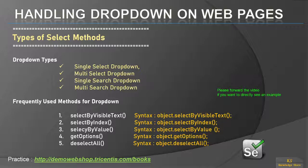Search means there will be a text box — when you try to type something, the dropdown will be displayed; until then it will be in hidden mode. Multi search means you can type to select two items and then select those dropdowns.